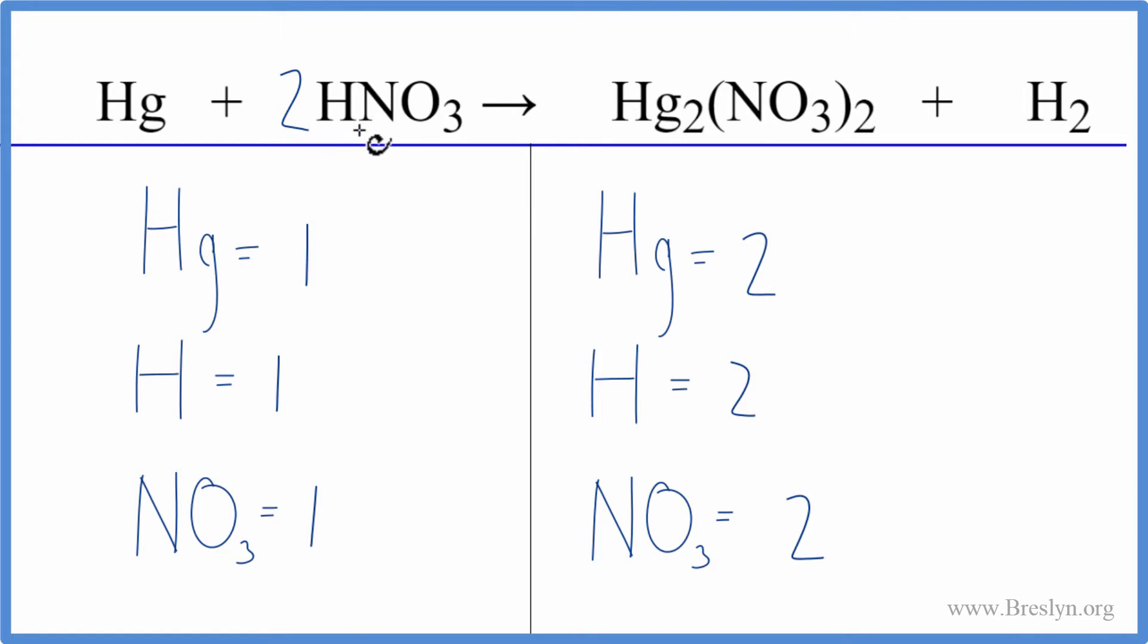Now we have one times two for the hydrogen. That actually balanced the hydrogen. We have one nitrate times two. That'll give us two for the nitrates. So those are balanced.